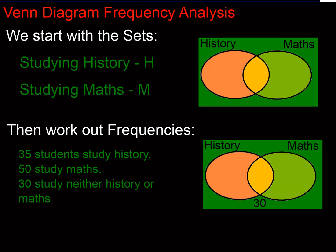Let's start with our set theory. We're going to create our Venn diagram using two sets: the set of students studying history and the set of those studying maths. There are our two circles for those two sets with an overlap, and we always start with that.